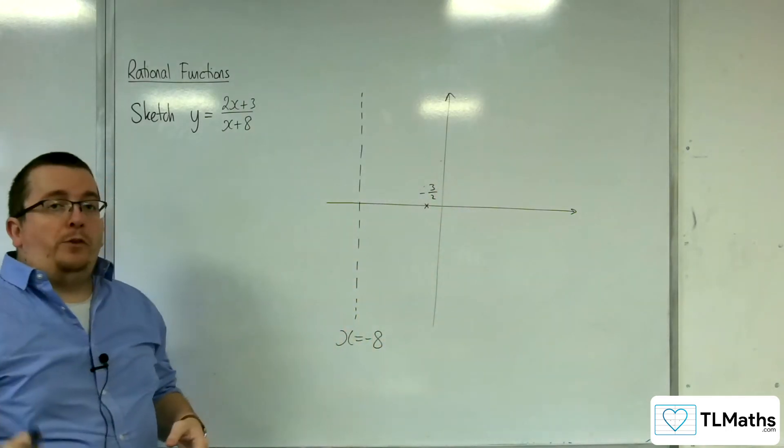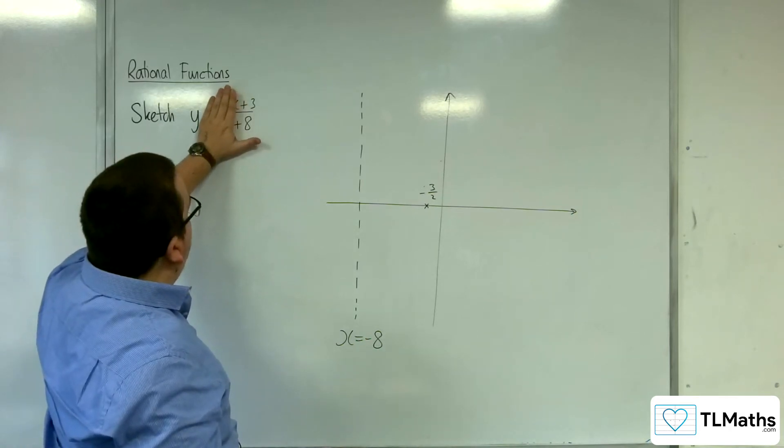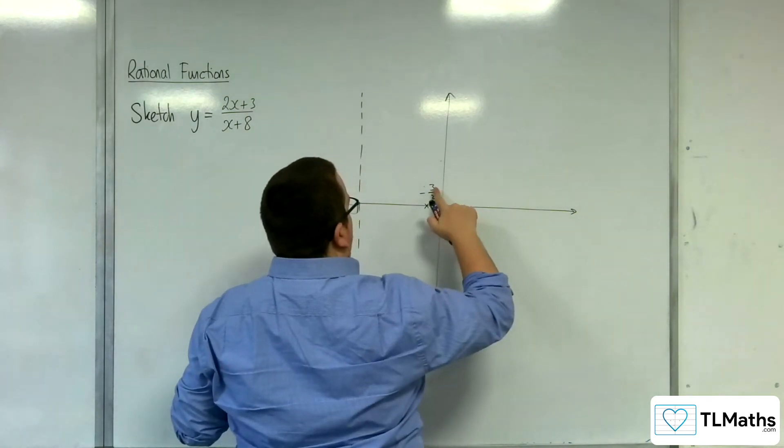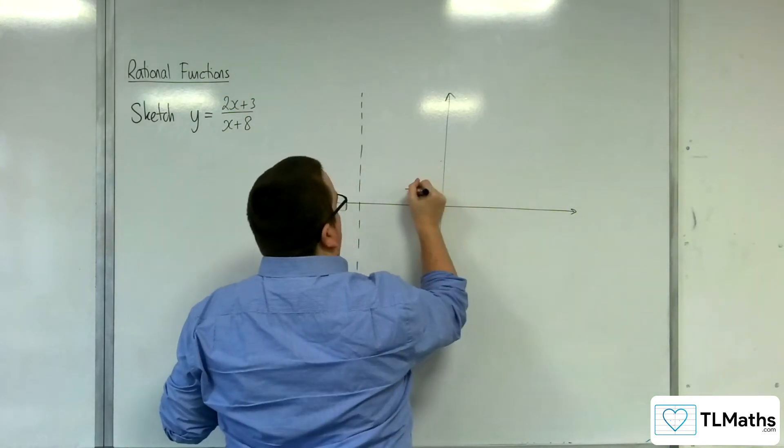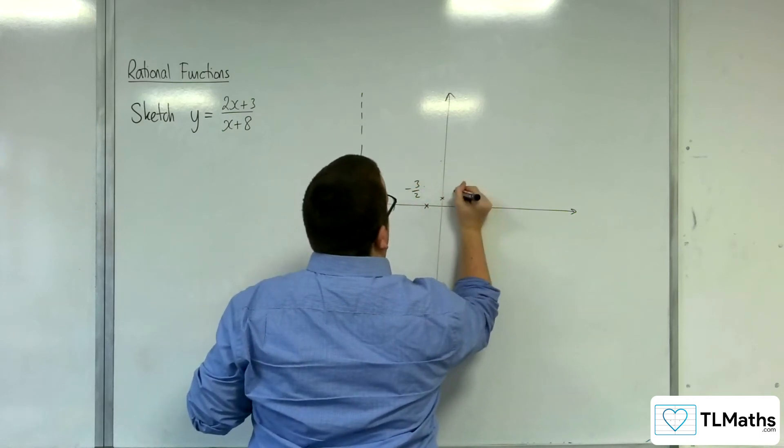Then we've got where it crosses the y-axis, which is when x is 0, which is at 3 over 8, so 3 eighths. Let's just move that a little bit. So 3 eighths, something like that.